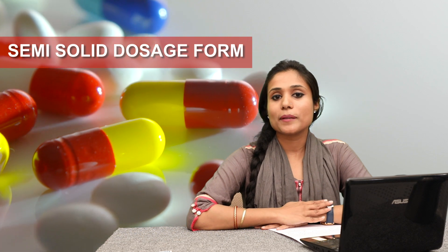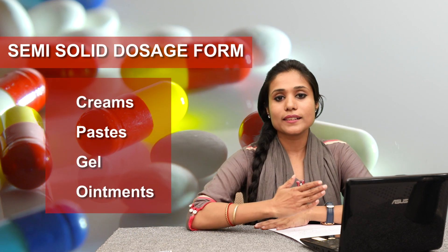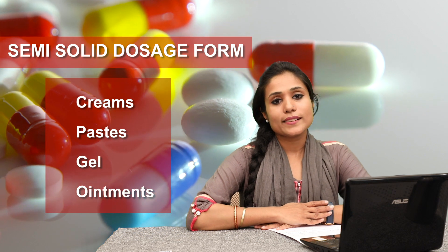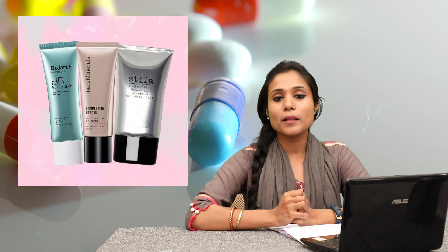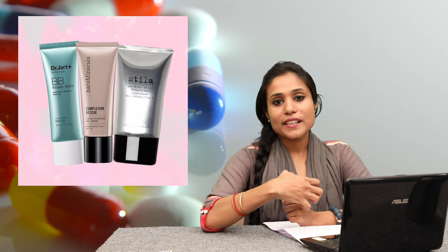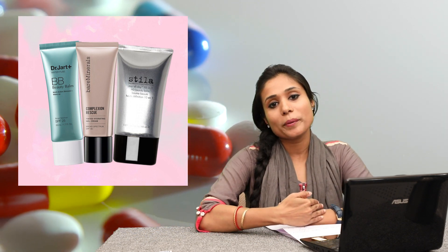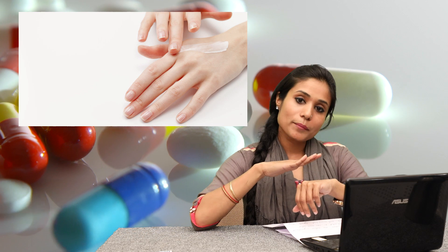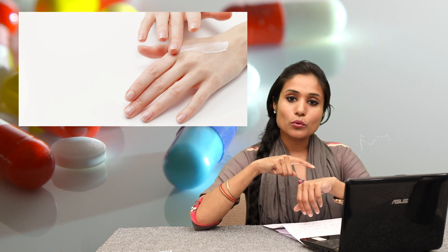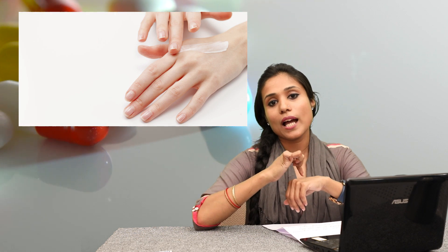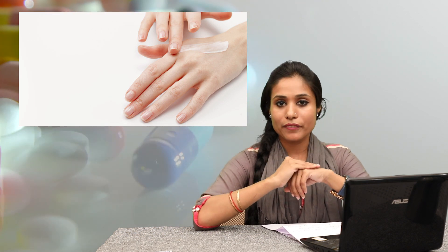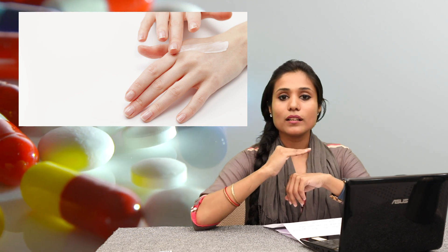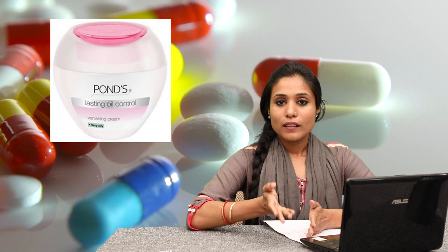The semi-solid dosage form is distributed into four types: Creams, Paste, Gels, and Ointments. Creams are medicament substances that you apply topically. The active drug substance for external use — when we apply it, the active drug substances penetrate. A common example is Cold Cream and Vanishing Cream.